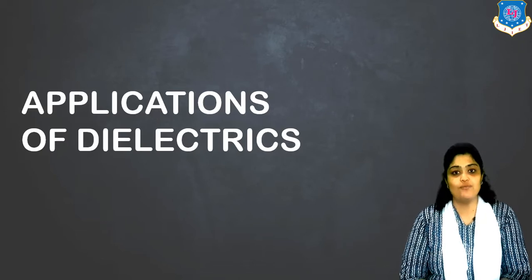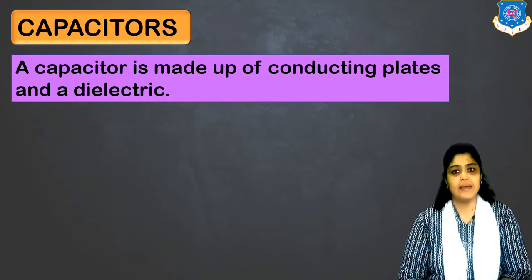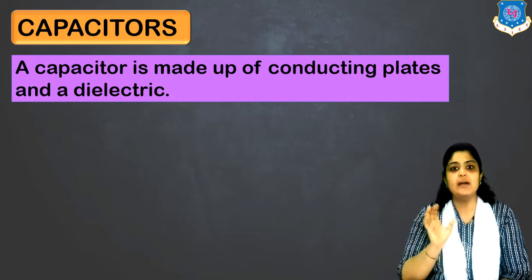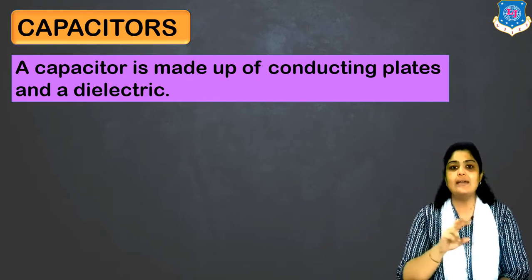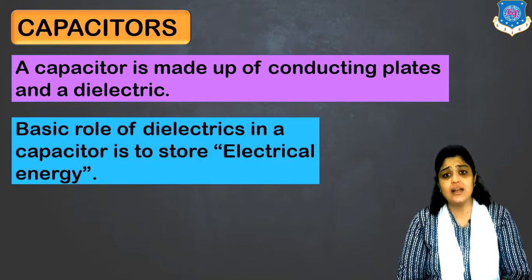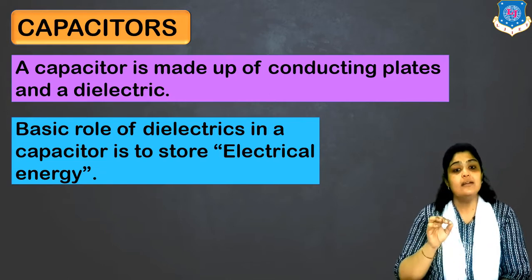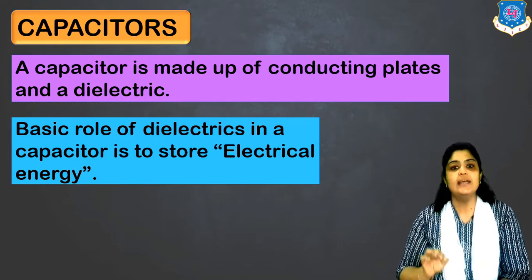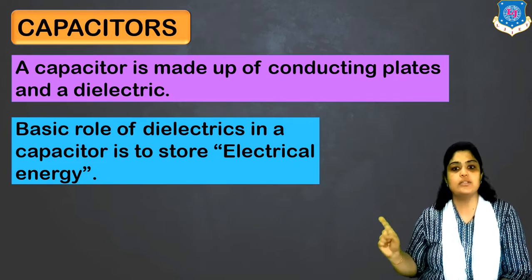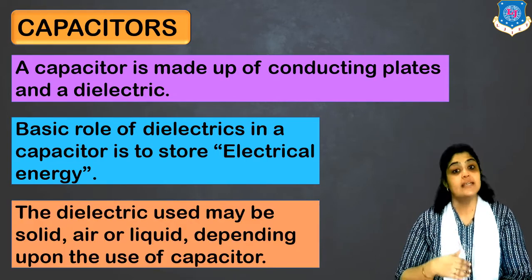We'll discuss the function of dielectrics in capacitors and transformers — exactly where they are used. Starting with the first application: a capacitor is nothing but two conducting plates with a dielectric material in between. You have two metal plates and a dielectric slab in between — this is the general construction of a capacitor. The basic role of a dielectric in a capacitor is electrical energy or charge storage.